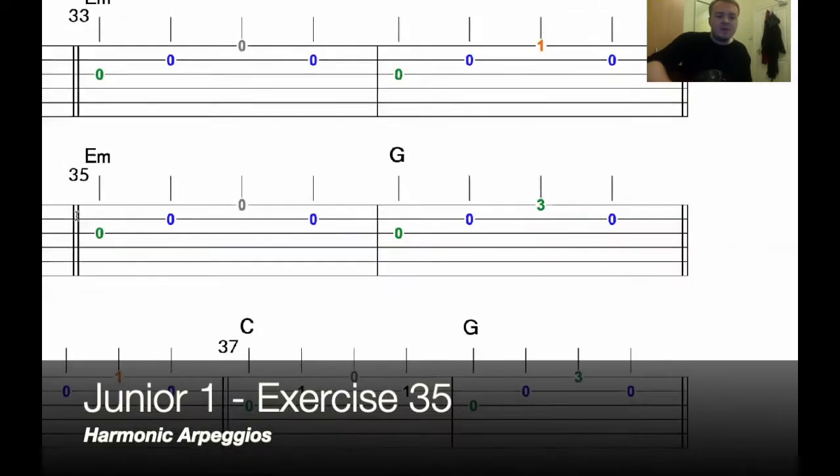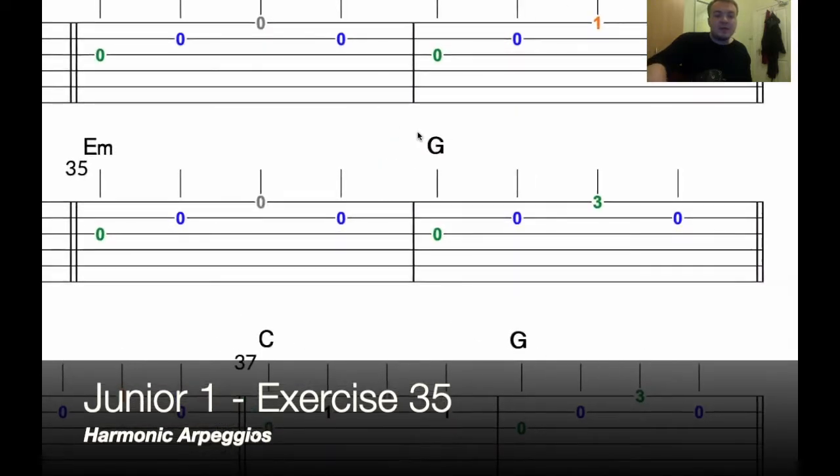Exercise 35 of Junior 1, and now we've got the G chord alongside the E minor. We're still doing 3, 2, 1, 2, but we're just adding that note there.